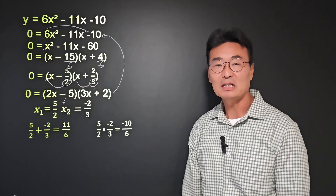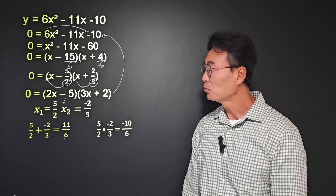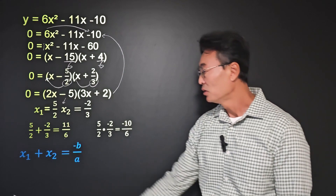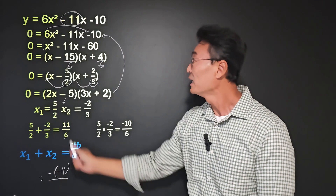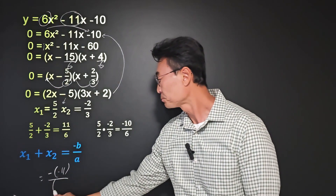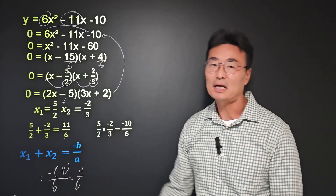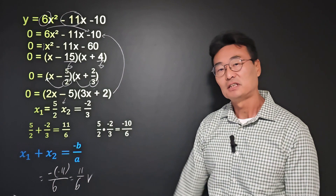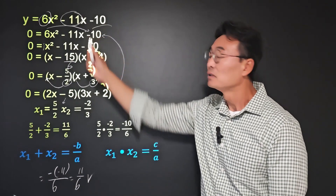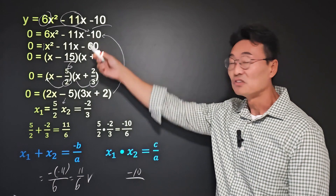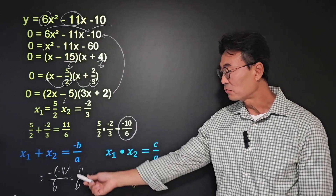As you can see, it took quite a bit of work and effort to find the sum and product of the roots that way. Using the formula, the sum is negative b over a, which is negative of negative 11 over 6, equaling 11 over 6 — matching exactly. The product is c over a, which is negative 10 over 6 — and that checks out as well.